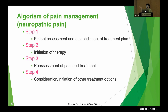This is an algorithm for pain management, specifically for neuropathic pain, with four steps. Step one is patient assessment and establishment of a treatment plan — utilizing physical examination and establishing the treatment plan, including which medication the patient should receive. Most importantly, establish a realistic treatment goal. Step two is initiation of therapy.